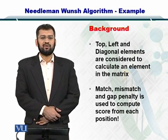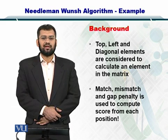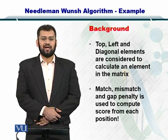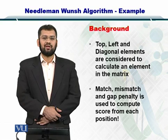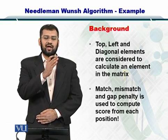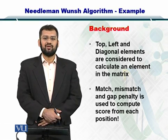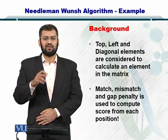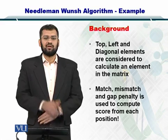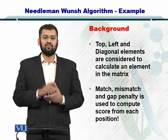In the Needleman-Wunsch algorithm, you compute the alignment matrix element by element. Each element involves utilization of the top, diagonal, and left elements to compute it. Once you have reached the bottom right, that is the last element in the matrix, your entire matrix is completely calculated.